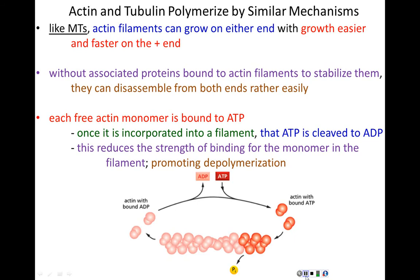This is the same exact story we told for microtubules, with the single exception that tubulin subunits bind to GTP and GDP. For the exam, remember that GTP is specific for tubulin and ATP is specific for actin.